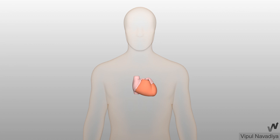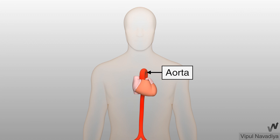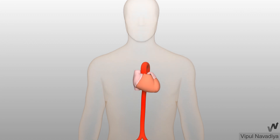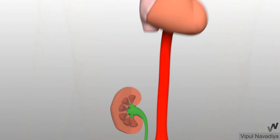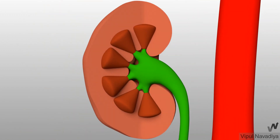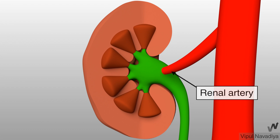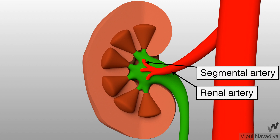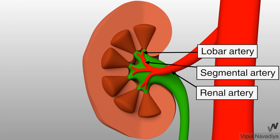As you must be knowing, the heart pumps blood into the aorta. The renal artery arises from the abdominal aorta. Upon entering the kidney, it divides into segmental arteries. The segmental arteries then divide into lobar arteries.